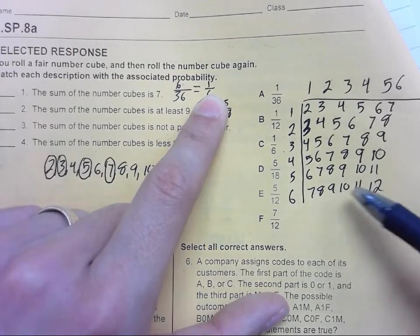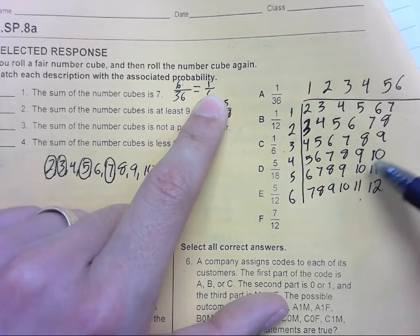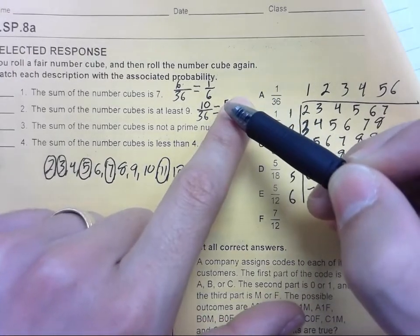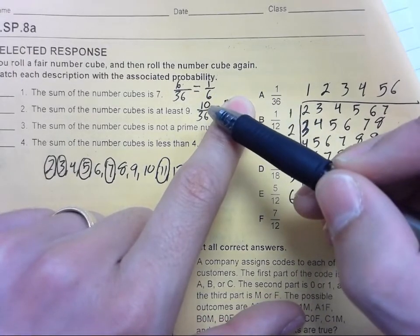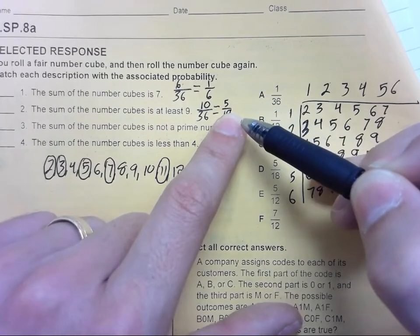So counting those: 1, 2, 3, 4, 5, 6, 7, 8, 9, 10. So that's 10 out of 36 ways. They're both even, divide both by 2. So 10 divided by 2 is 5, and 36 divided by 2 is 18.